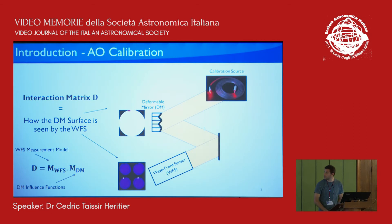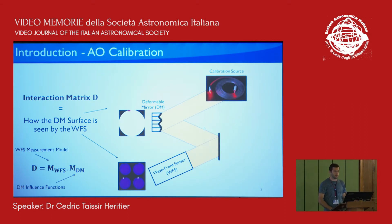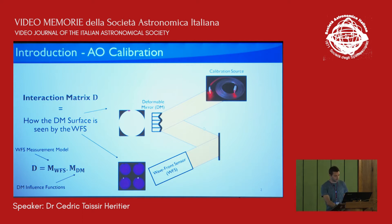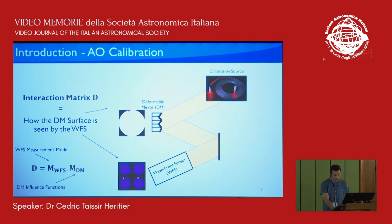Here is an introductory slide presenting how you calibrate an AO system in most existing AO systems. You use an external calibration source, poke on each DM mode or actuator, record the corresponding signals, and get the interaction matrix — the image of the influence function in the wavefront sensor space. This is quite easy to do.